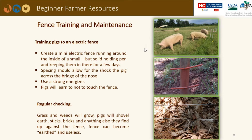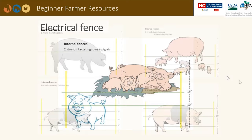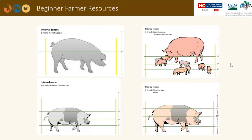When training a pig to electric fence, create a mini electric fence run inside of a small but solid holding pen and keep them there for a few days. Make sure to use a strong energizer to deliver a good stout shock. This way the pigs will learn not to touch the fence and they will remember it. Once again, appropriate fence height is snout height. Perimeter fences should have multiple strands, and multiple lines may be required to control smaller pigs. Here are some examples of electric fence spacing.